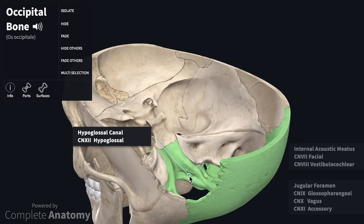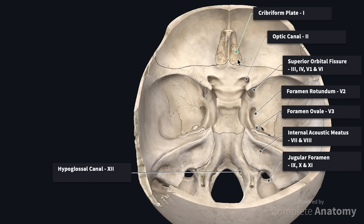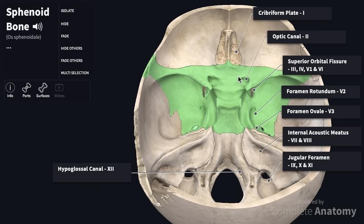Now let's recap. The cribriform plate of the ethmoid is where the first cranial nerve is transmitted — the olfactory nerve. Within the sphenoid, we have the optic canal which transmits the optic nerve; the superior orbital fissure which transmits the oculomotor, the trochlear, the first branch of the trigeminal (the ophthalmic nerve), and the abducens nerve. Posteriorly, we have the foramen rotundum which transmits the maxillary branch of the trigeminal nerve, and the foramen ovale which transmits the mandibular branch of the trigeminal nerve.